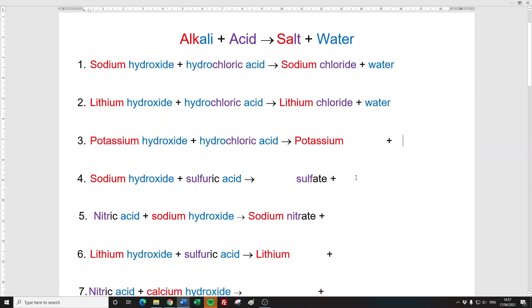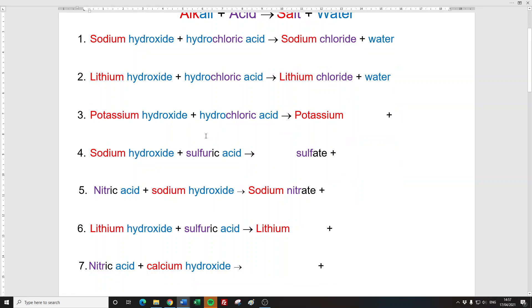Okay. Following the same patterns. Acid and alkali makes a salt plus water. So we always know there's always water. And potassium, well, it's hydrochloric acid again. It's chloric. So let's go there. Potassium chloride.